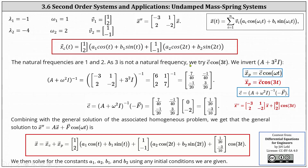To find a particular solution, note the natural frequencies are one and two; since three is not a natural frequency, we try X sub p equals C times cosine of three t. We find the constant vector C by computing the inverse of the sum of A and omega squared I, then multiplying by the opposite of vector F, which is the vector zero, negative two. This gives C equal to the vector one-twentieth, negative three-tenths. The general solution is X equals x sub c plus x sub p: the vector one, two, times the sum of A one cosine t and B one sine t, plus the vector one, negative one, times the sum of A two cosine two t and B two sine two t, plus C times cosine three t.